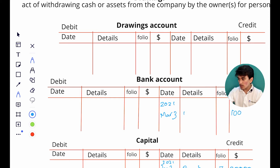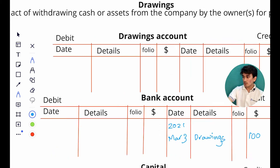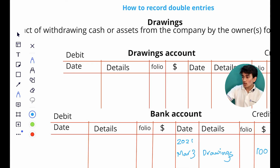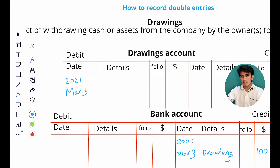Similarly, in our drawings account we go to the debit side - the receiving side - and write over there firstly the date, which is March 3rd, then the account which gave the one hundred dollars, which is the bank account. So this is how we record drawings.